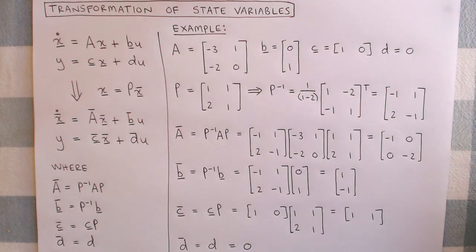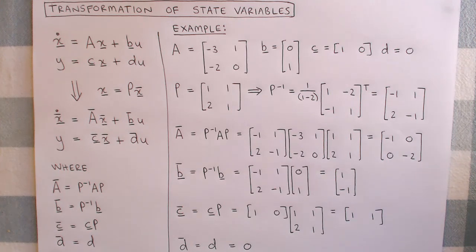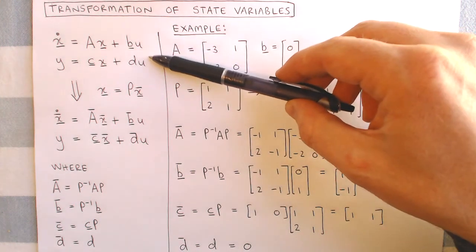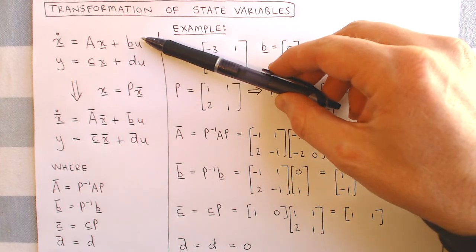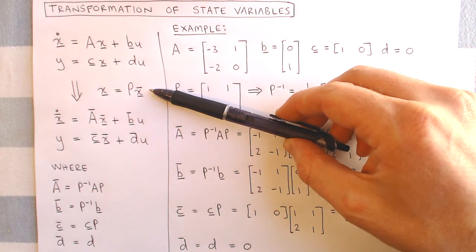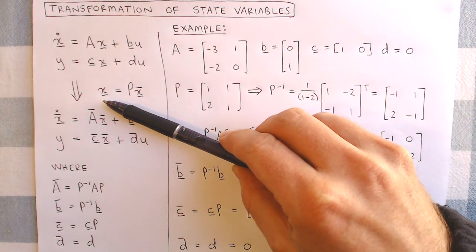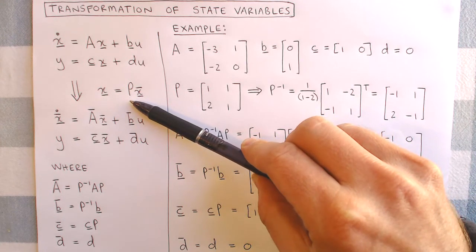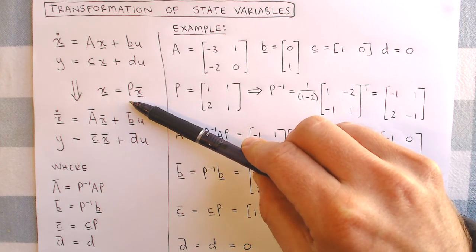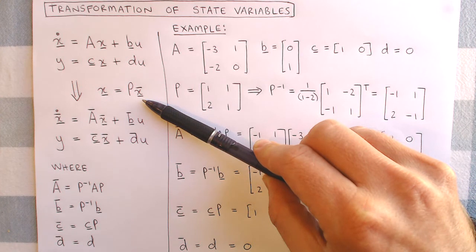The definition of the states of a system is not unique. If we choose a different set of states and transform the model accordingly, then we can transform the state variable model to a different state variable model. For this transformation, we start with an original state variable system. The transformation of states is given by this equation, where x is our original state vector, P is a non-singular transformation matrix, and x-bar is the new state vector.